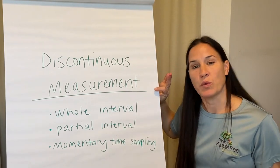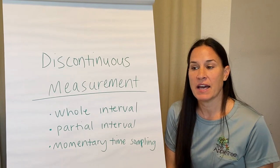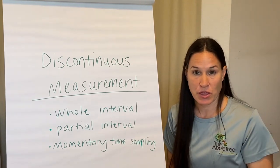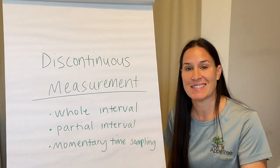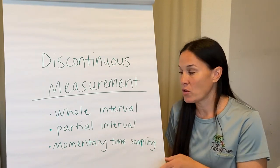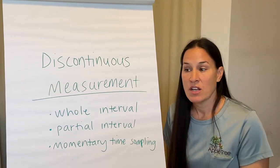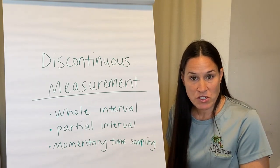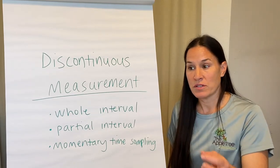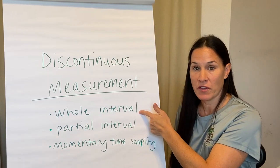Discontinuous measurement is when some behaviors are recorded. For whole interval, the criteria is that you break an observation period into set intervals. Let's say it's a 30-minute observation period and you want six equal intervals of five minutes — five times six is thirty. That's what your behavior team has decided. We'll use in-seat behavior as an example. You break that 30-minute observation period into six five-minute intervals, and if you're collecting data on in-seat behavior, you start your timer for the first five-minute interval.